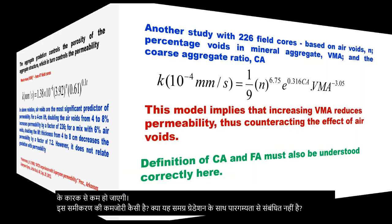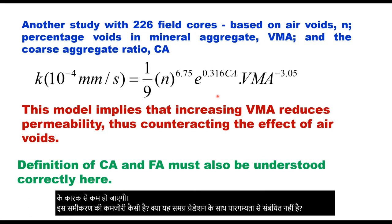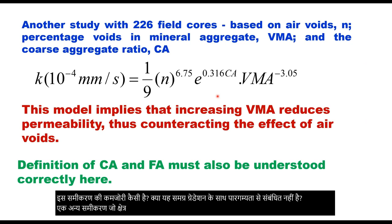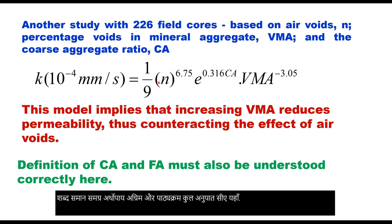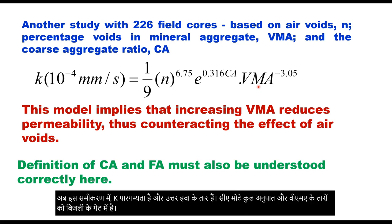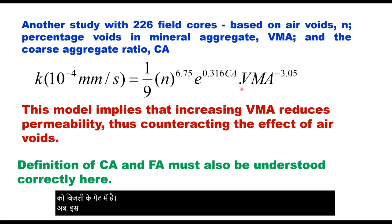Another equation was developed from field samples based on air voids, voids in mineral aggregate (VMA), and the coarse aggregate ratio CA. In this equation, K is permeability, N is air voids, CA is coarse aggregate ratio, and VMA is voids in mineral aggregate. This model implies that increasing VMA will reduce the permeability and therefore counteract the effect of air voids.